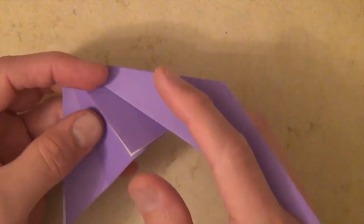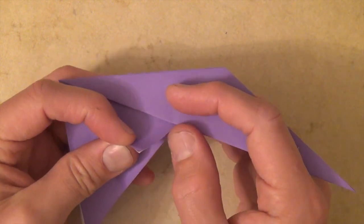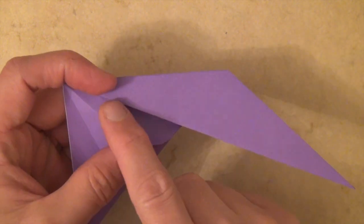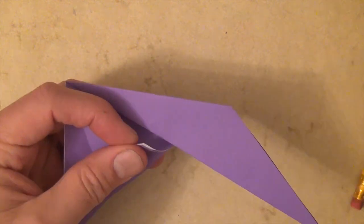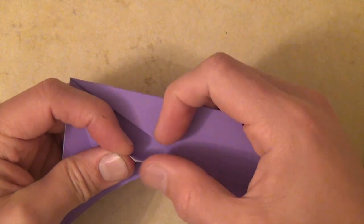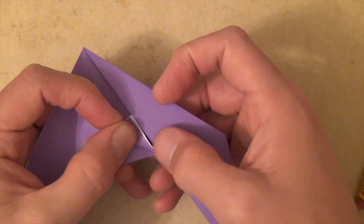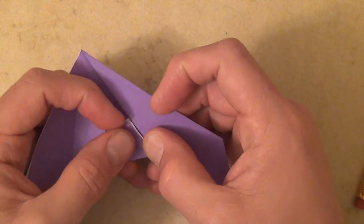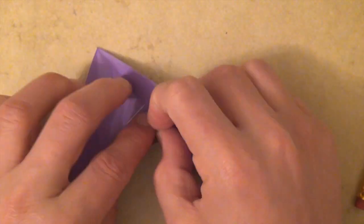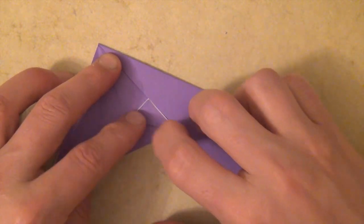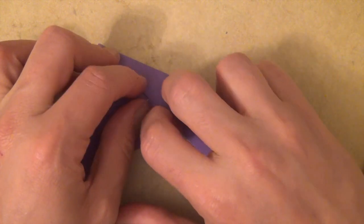And now we're going to take this flap, and we're going to fold this edge up to this edge. So we're folding on this point. So we just take the edge right here and fold it to here.